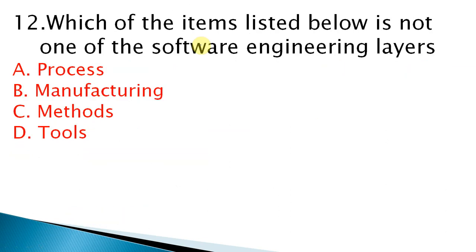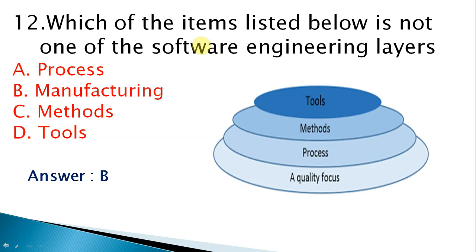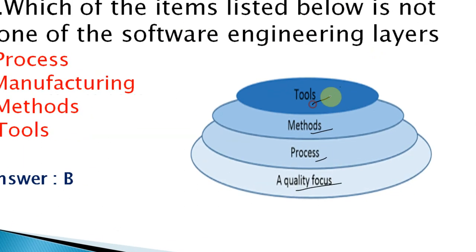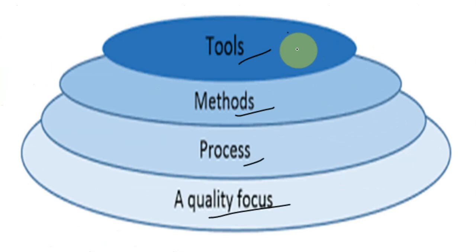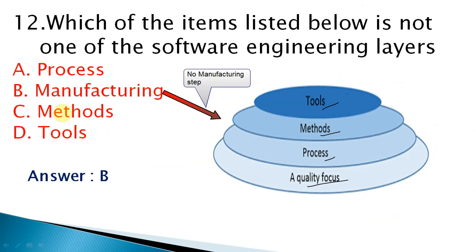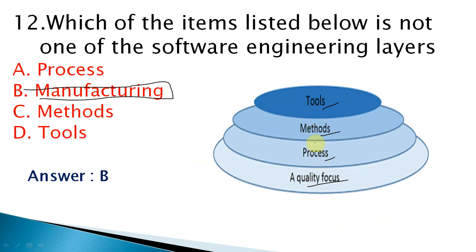Twelfth question: which of the items listed below is not one of the software engineering layers? The software engineering layers are: quality focus, process, methods, and tools — remember the order as QPMT. The foundation is quality focus.